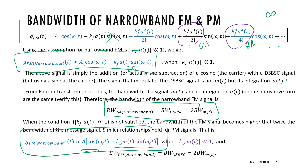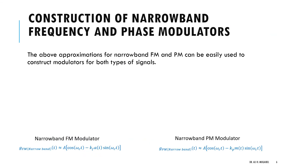The conclusion is that narrowband FM and PM can each be written as a carrier term plus a DSB-SC-like term, except we modulate with minus sine instead of cosine, and there is a constant. For narrowband FM we modulate with minus sine of the integration of the message a(t). These two expressions for narrowband FM and PM should be memorized, as they are needed to implement the generator.